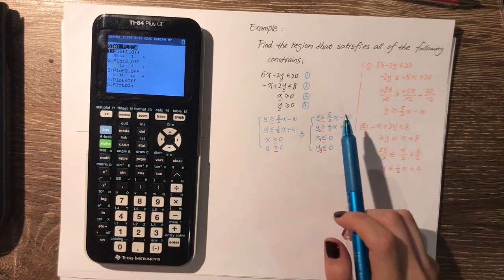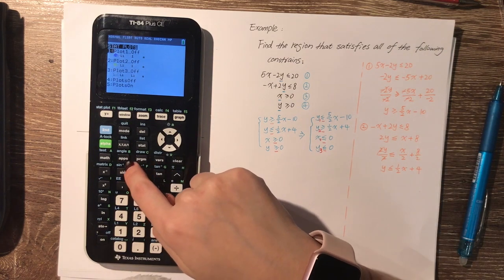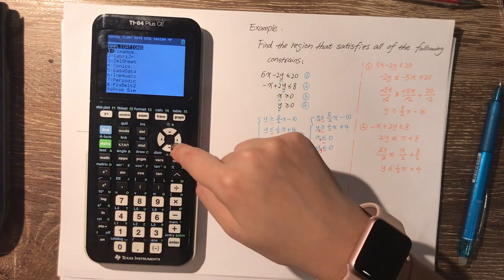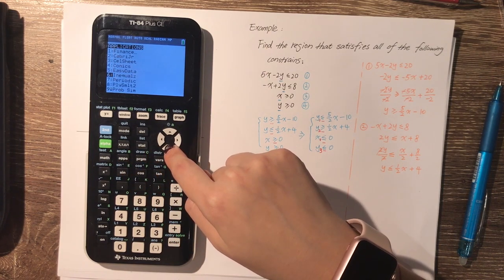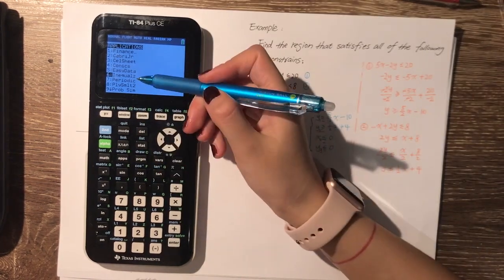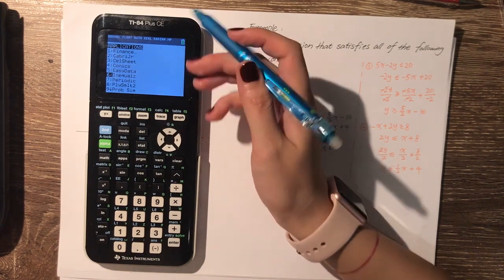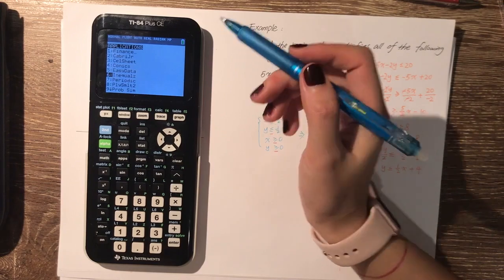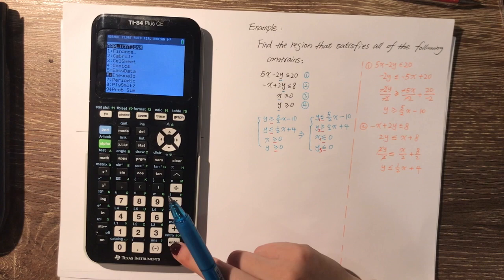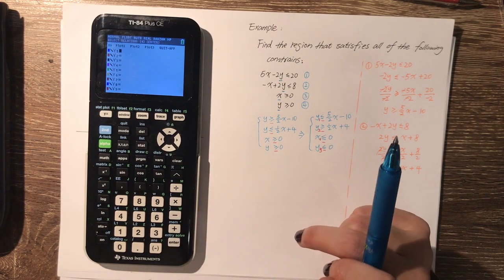To enter the inequalities, click APPS and find the app called Inequalz — it's number six on my calculator but may be different on yours. Click ENTER twice to open it.